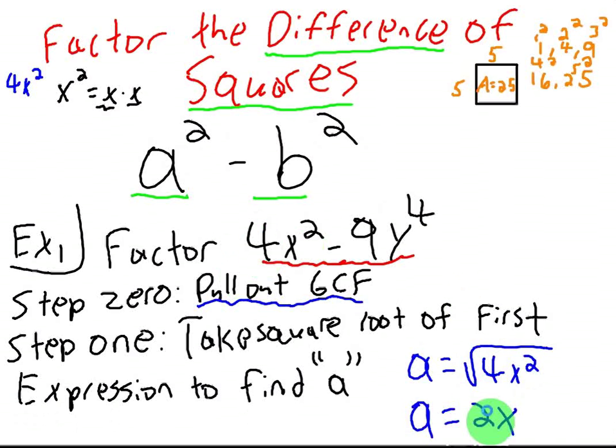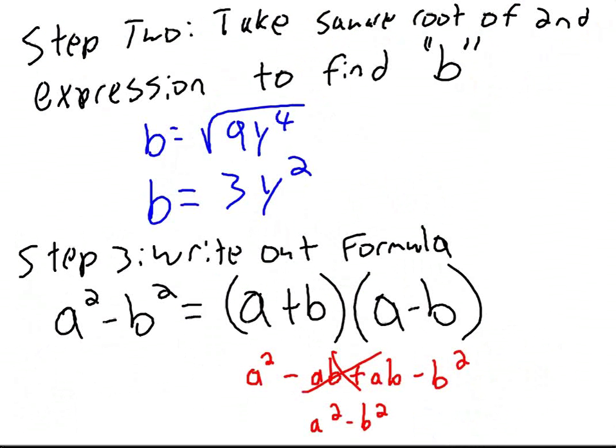Remember, you can distribute a square root to both terms inside. So what's the square root of 4? 2. And what's the square root of x squared? Good. So your A is equal to 2x. To figure out A, you take the square root of your first term, and that will give you A. It's real easy. How do you guys think you're going to find B? Take the square root of the second term.